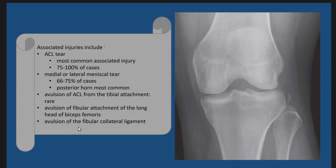Or association with an avulsion fracture of the fibular collateral ligament. So again, the Segond fracture is a relatively common avulsion fracture of the lateral tibial plateau, with the so-called lateral capsular sign, and its main associations are ACL tear and medial or lateral meniscal tear, especially the posterior horn.